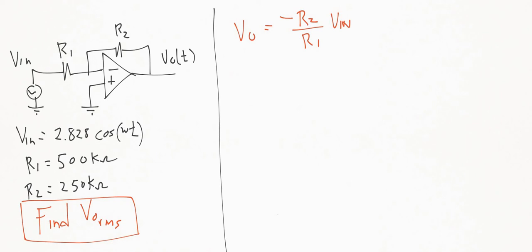Now, the problem specifically asks us to find the output voltage in RMS. So what we're going to do here is we're going to turn VN into RMS. And the way we would do that is by taking the peak voltage here, that's 2.828 volts.